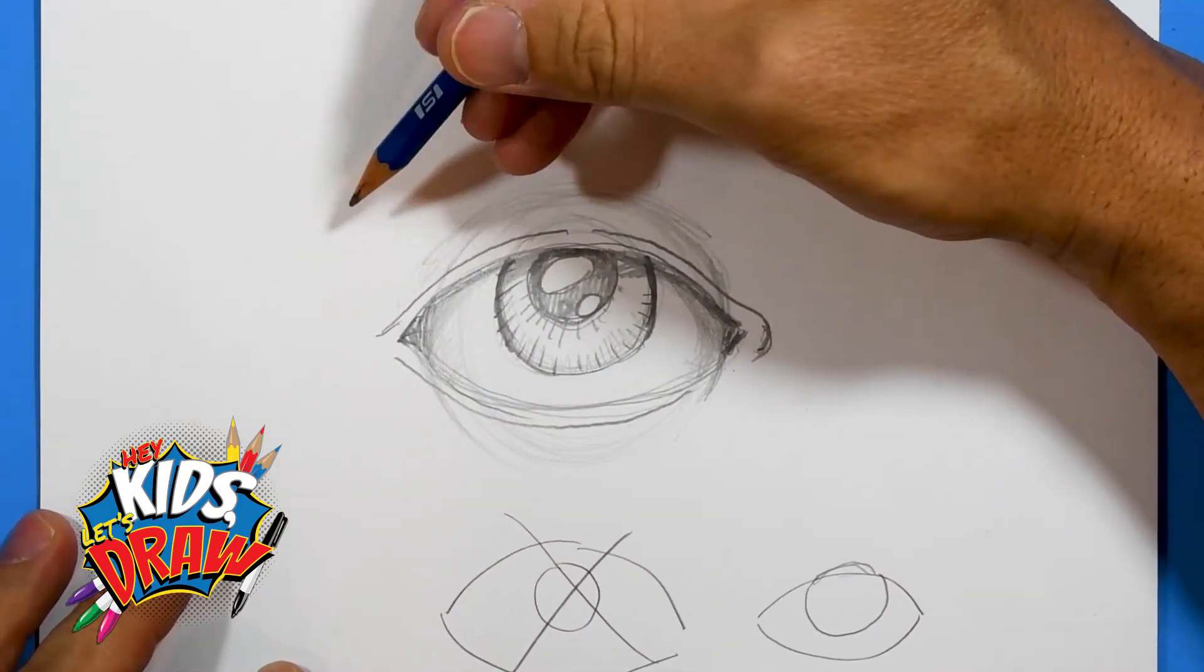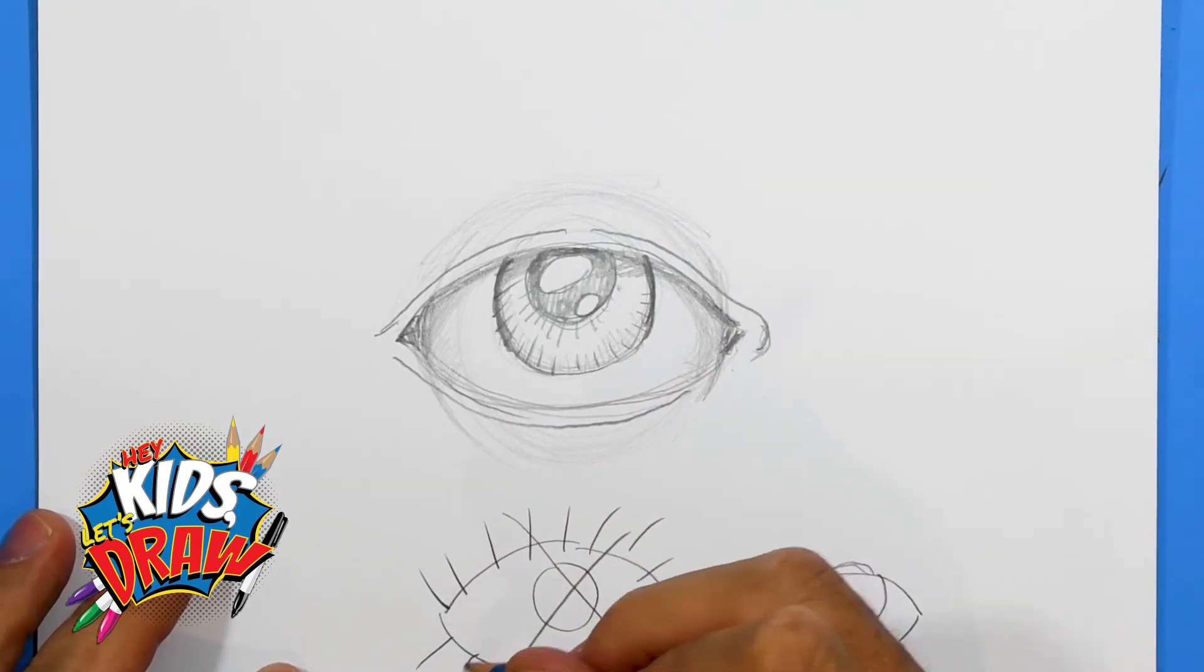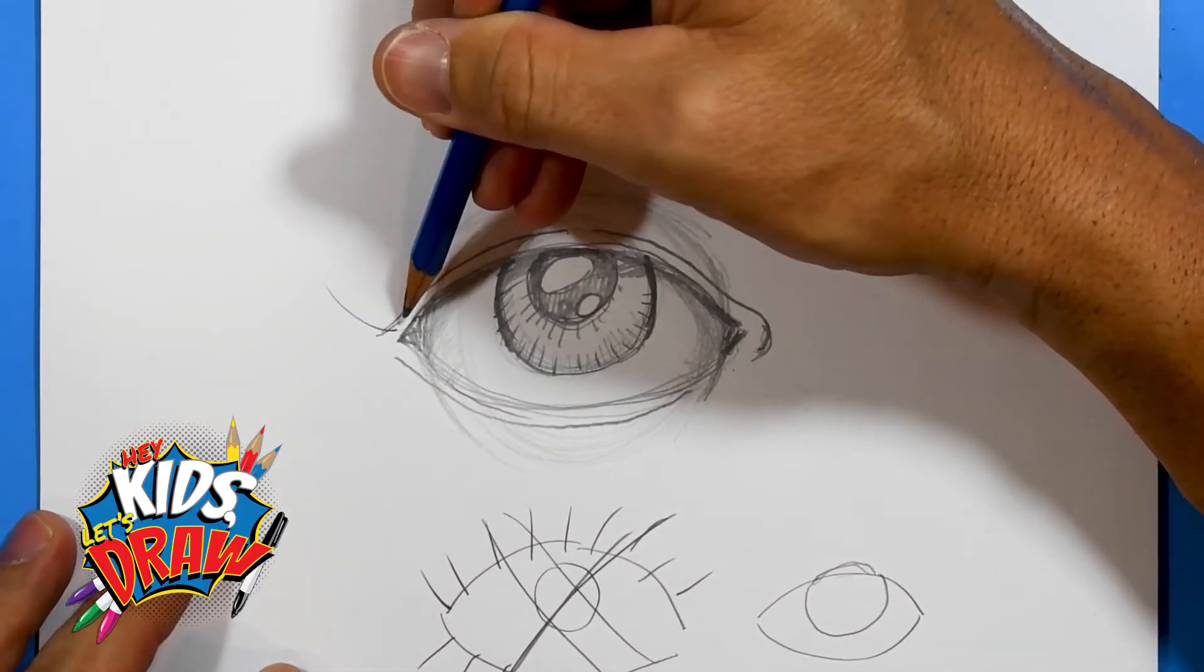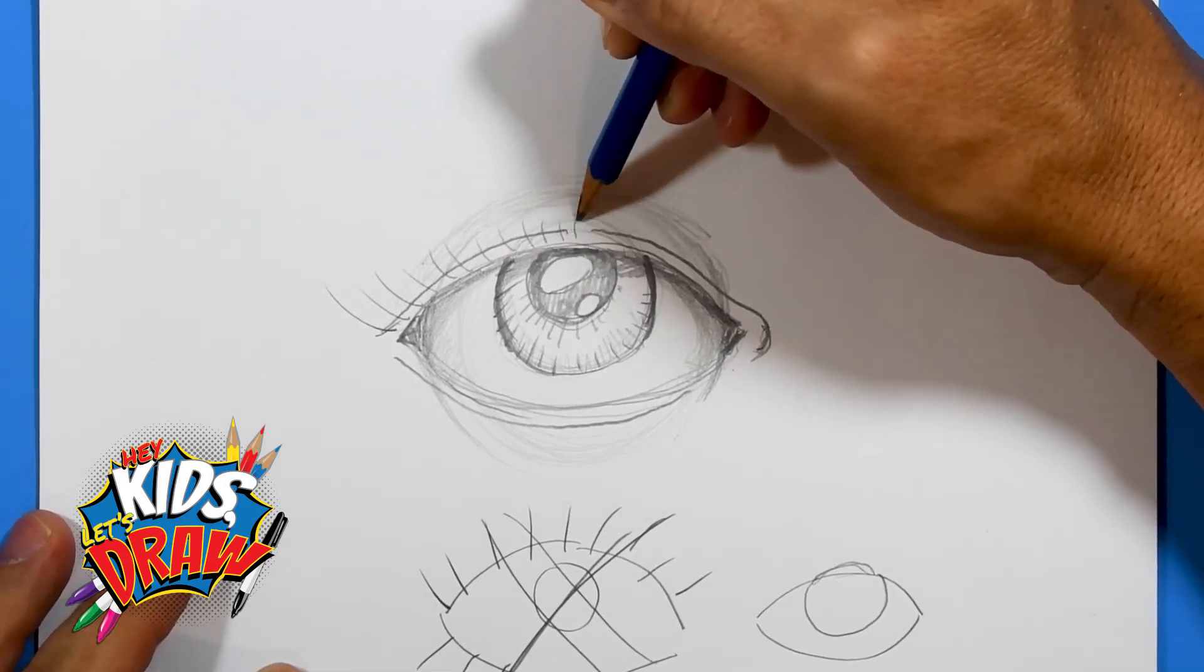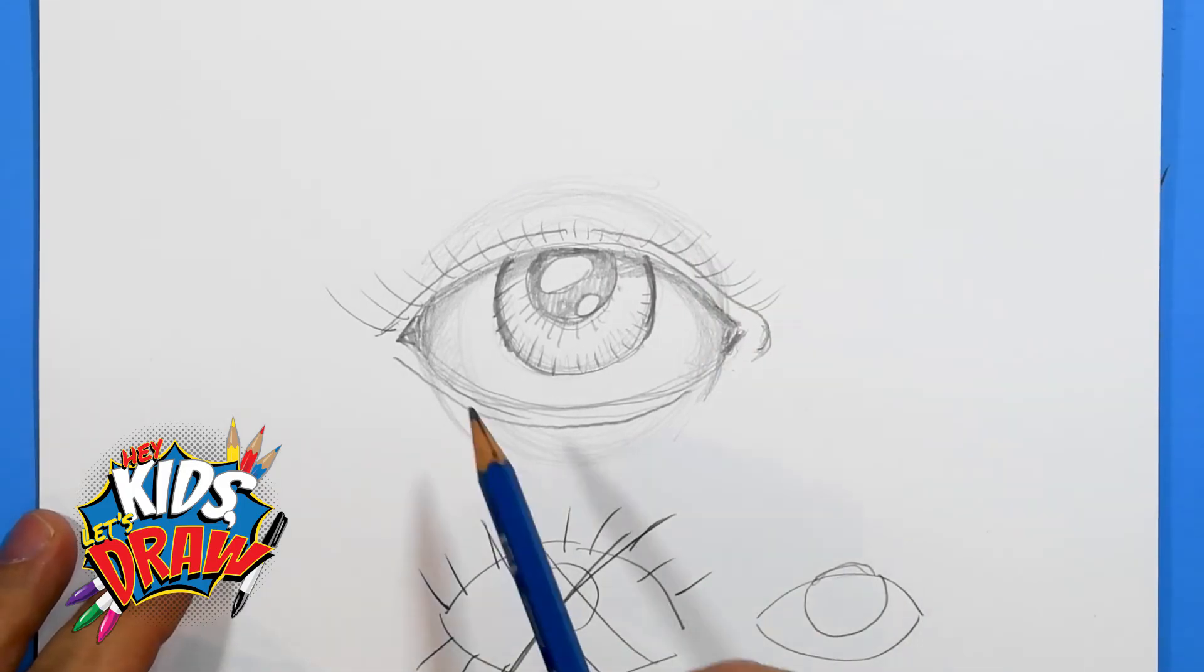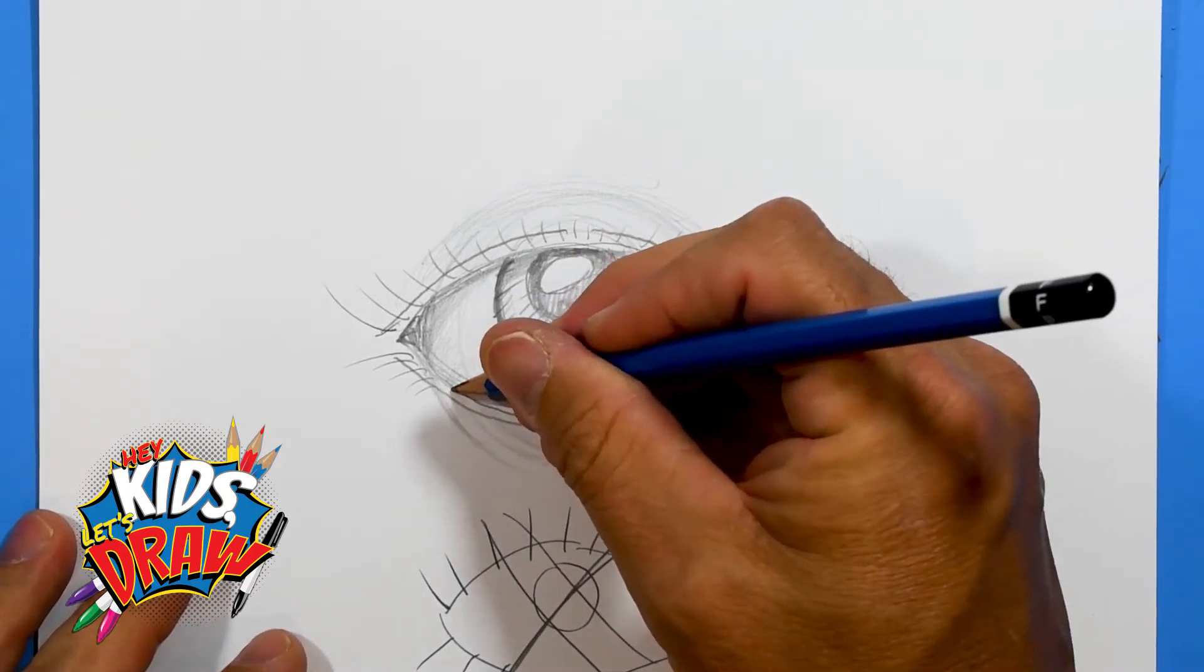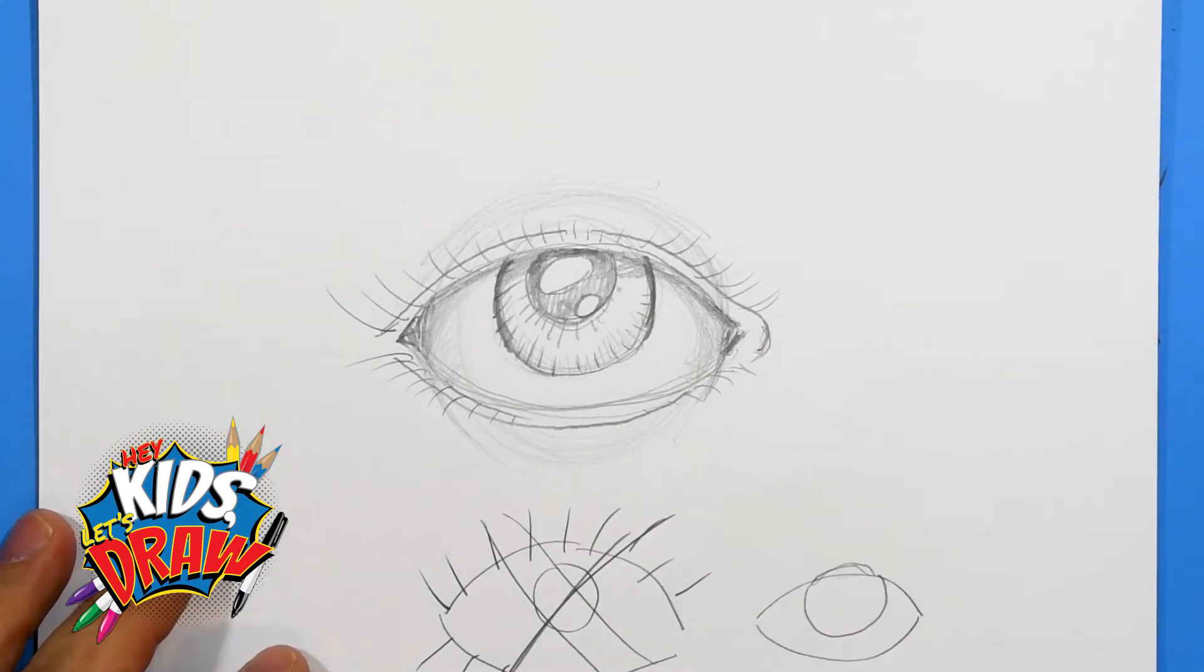Eyelashes are not straight lines like this. No, they curve. We'll start at the outside right here, they kind of curve, and as they get to the center they get shorter and then they curve out a little bit like so. Same with the bottom, just kind of little curves like that.